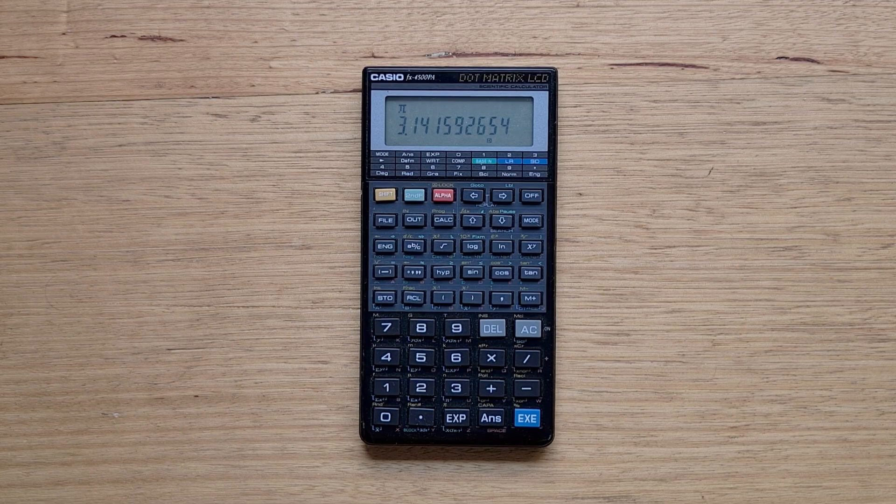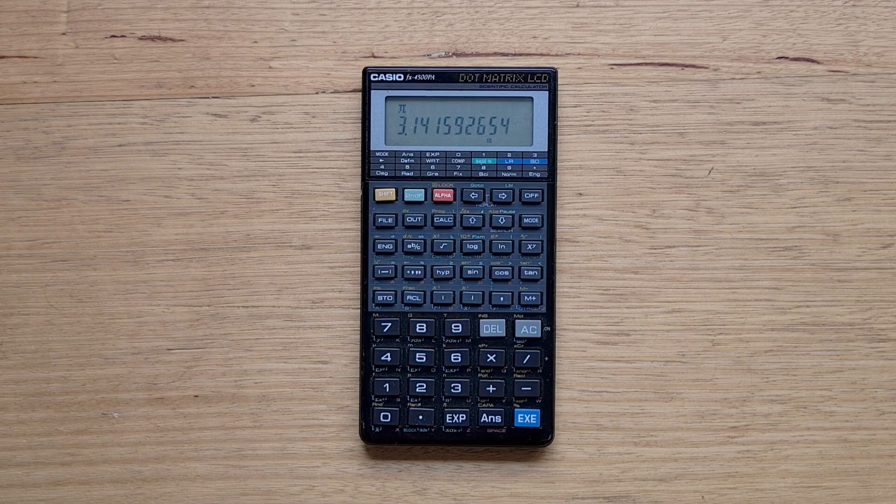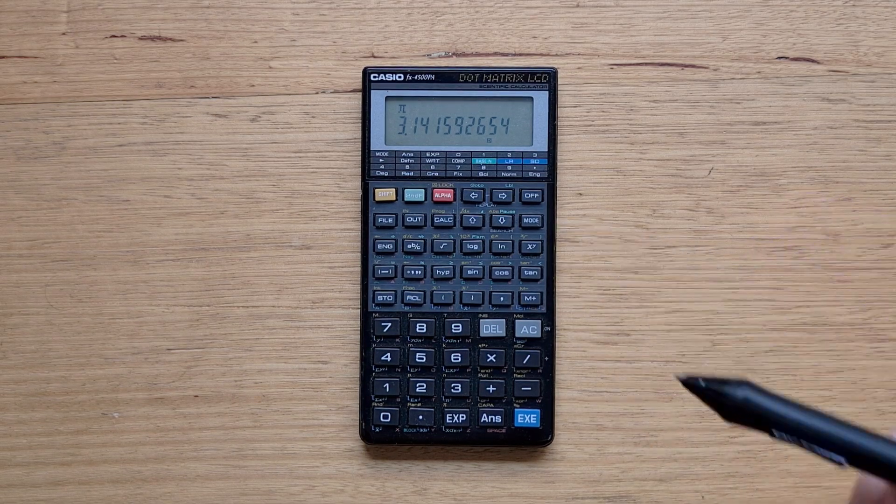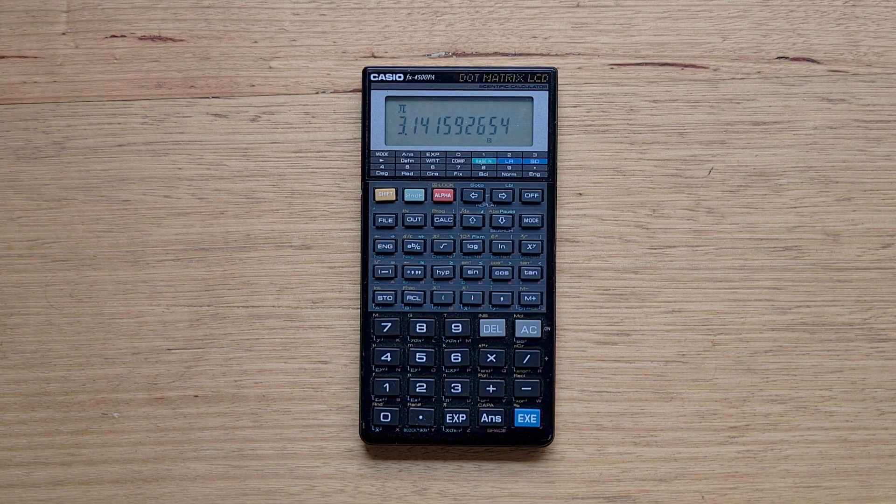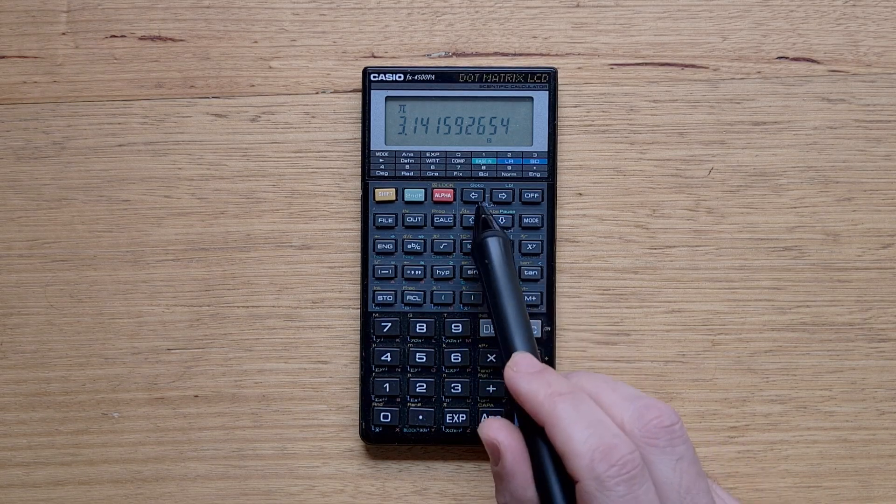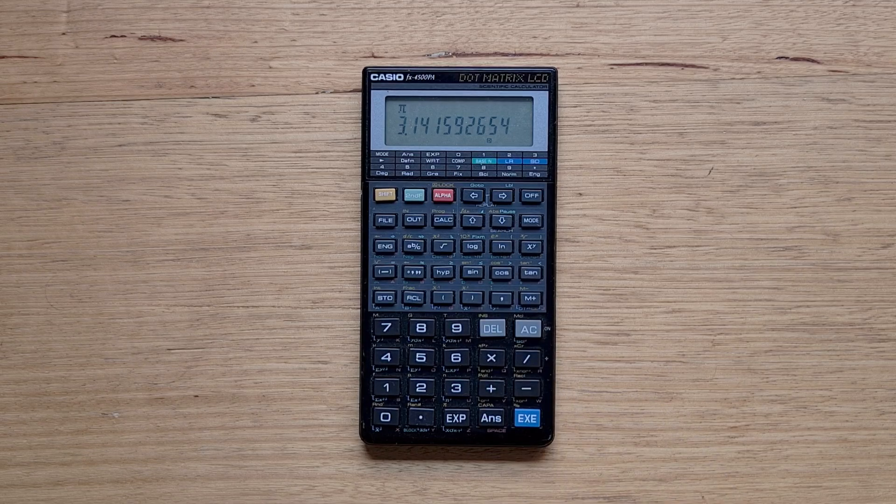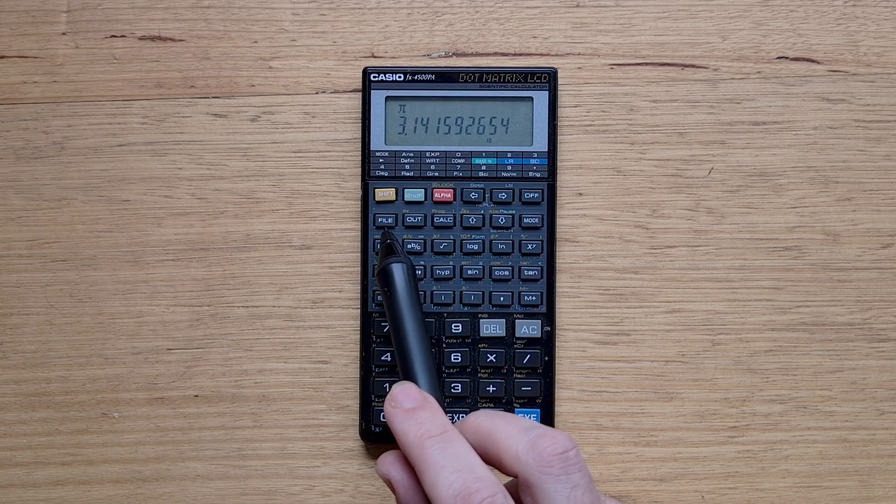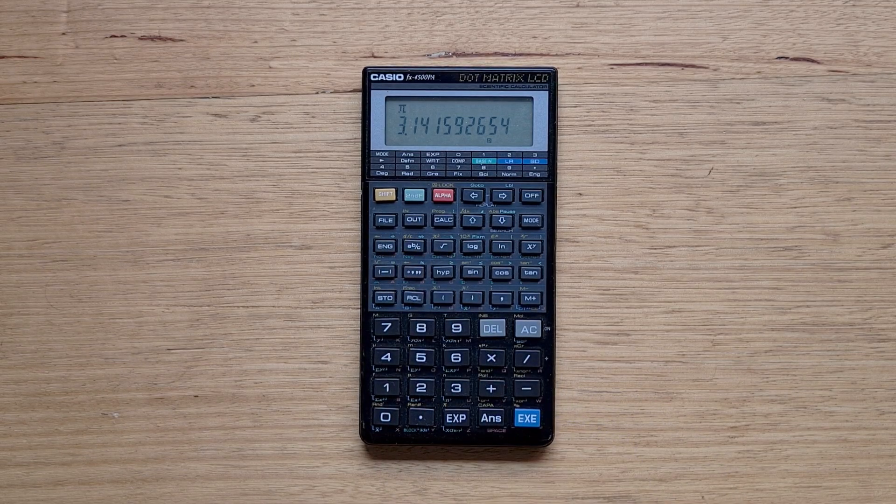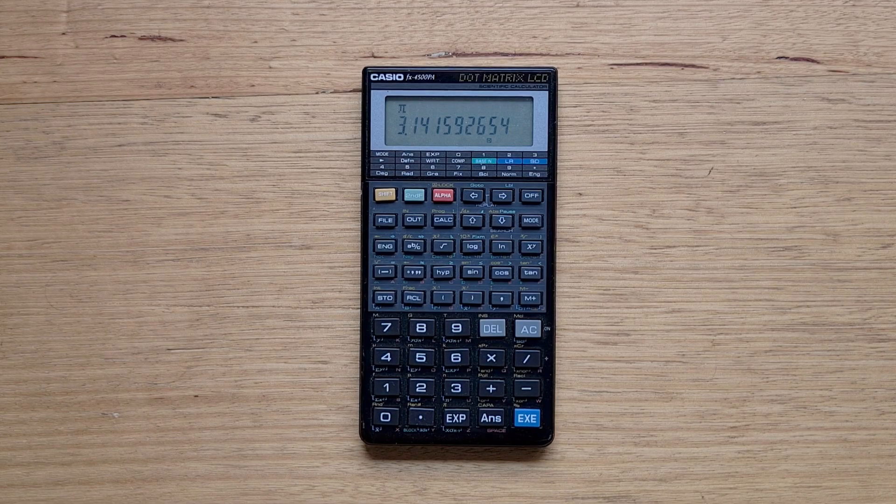Not sure to what degree the labels on this particular device have faded over time, but I've read other people online talking about the same issue. The keypad has the usual Casio mode key, an answer key, and an execute key. There are four arrow keys and three keys file, out, and calc that are related to new functionality.